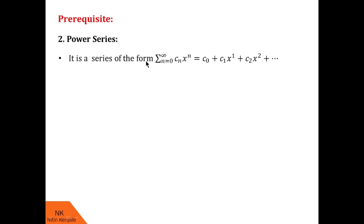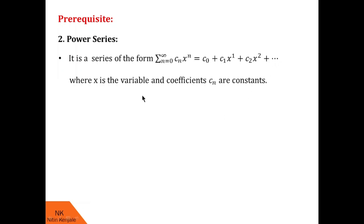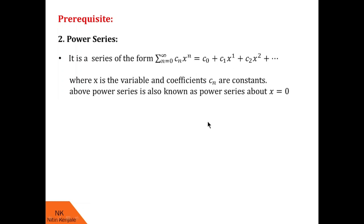Now let us proceed to power series. It is a series of the form summation c_n x raised to n, where n runs from 0 to infinity. If you substitute values of n one by one, you will see the power series is given by c_0 + c_1 x + c_2 x² and so on. Here x is the variable and c_i's are the coefficients. This power series is also known as the power series about x = 0.